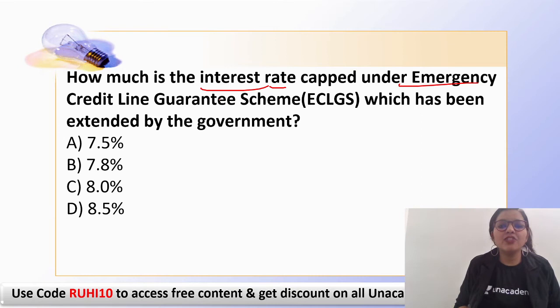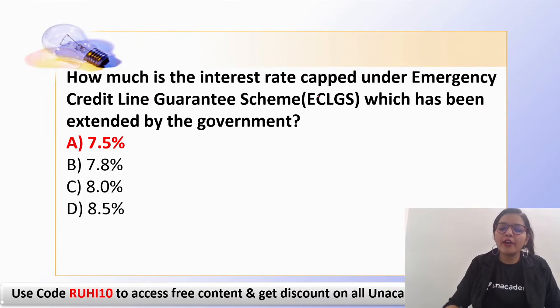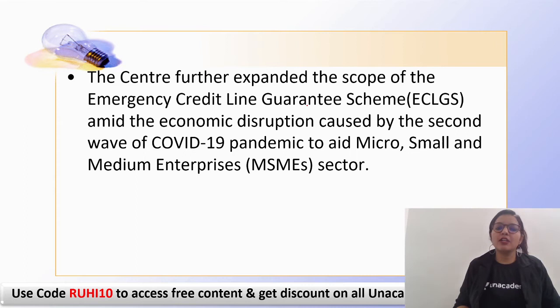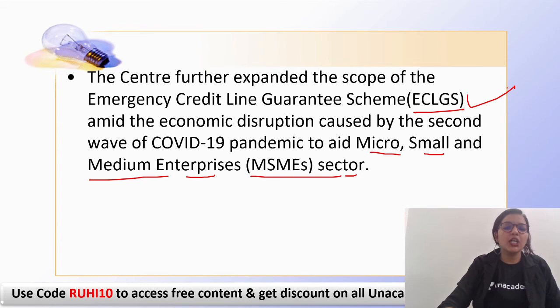The next question: what interest rate has been capped under the ECLGS — Emergency Credit Line Guarantee Scheme? The interest rate under ECLGS is 7.5%. The central government has extended the ECLGS as a COVID-19 pandemic relief measure, offering assistance to MSMEs — Micro, Small and Medium Enterprises — at an interest rate of 7.5%.